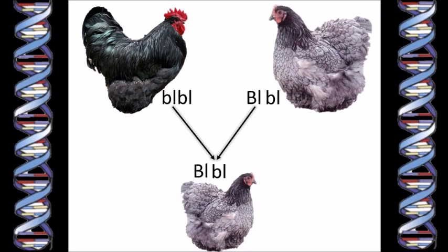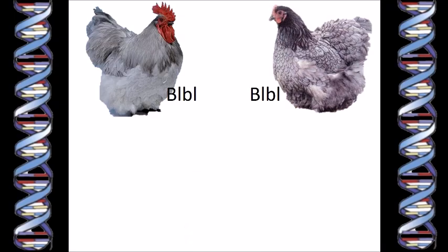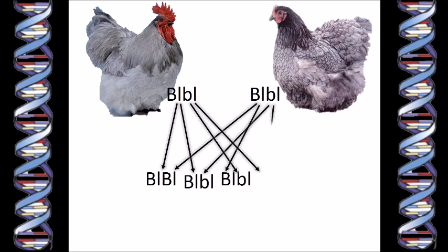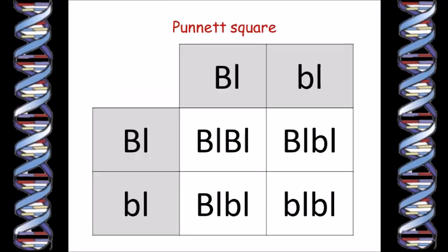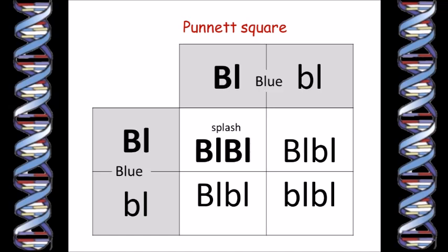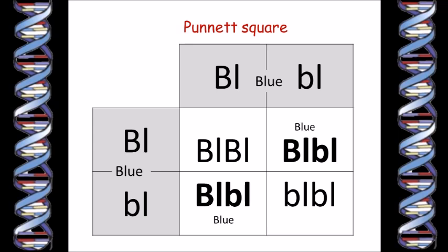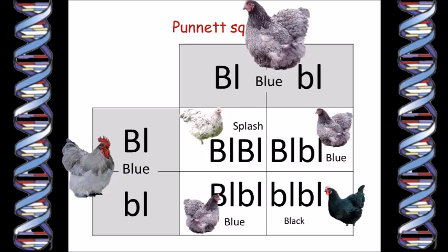The fun really starts when we mate our blue chicken with another blue chicken. The blue hen can pass on either of her two different genes, and since the rooster is also blue, we know he is also heterozygous and could pass on either of his different genes. When we map it out in this grid — called a Punnett square, because it was first invented by a Mr. Punnett — we can see that the next generation can have two big BL genes and so will be splash, or one big BL and one little bl and will be blue, or two little bl genes which is the genotype for black. So two blue chickens can have baby chicks that are blue, black, or splash.